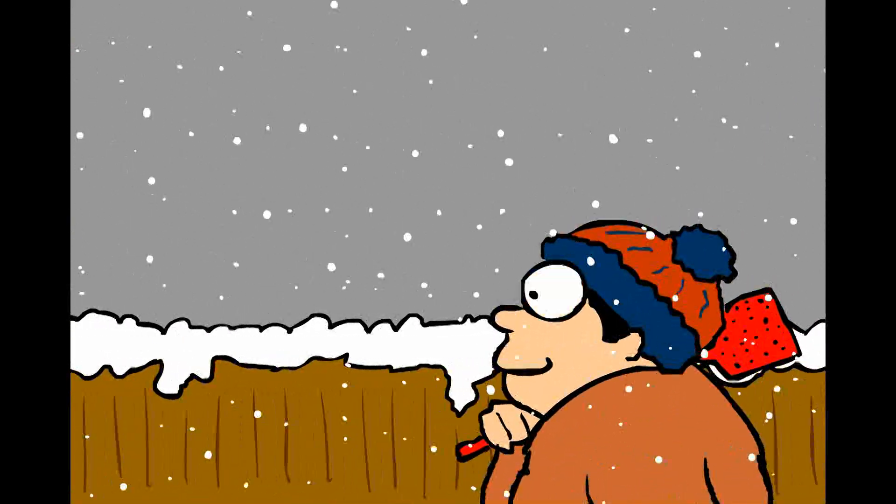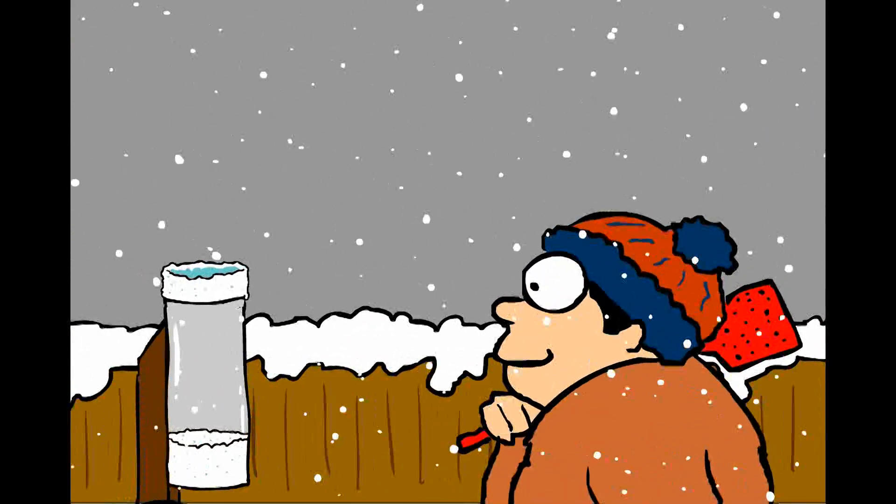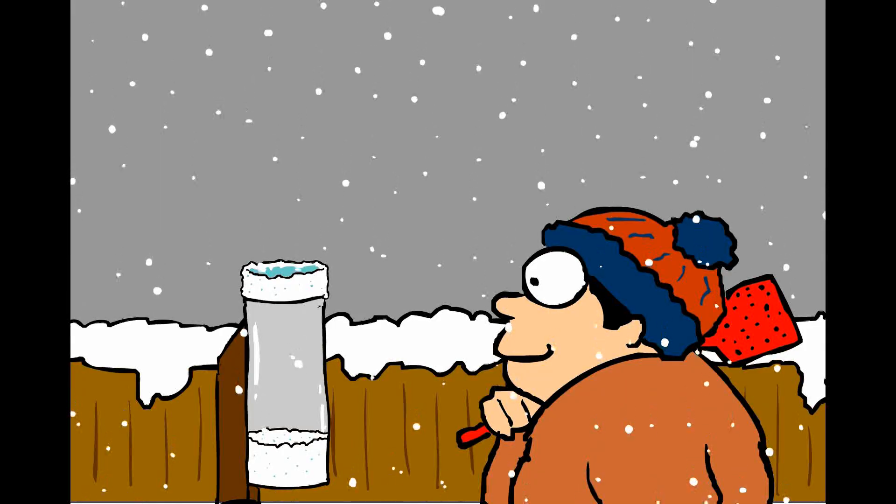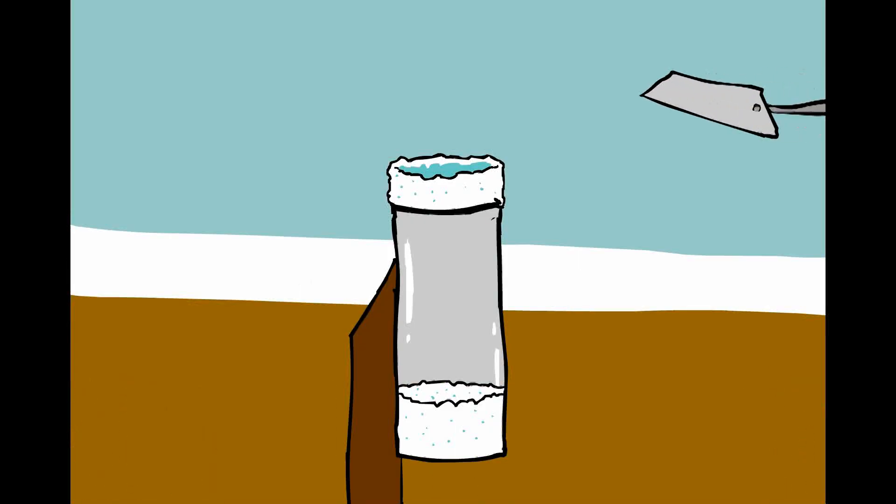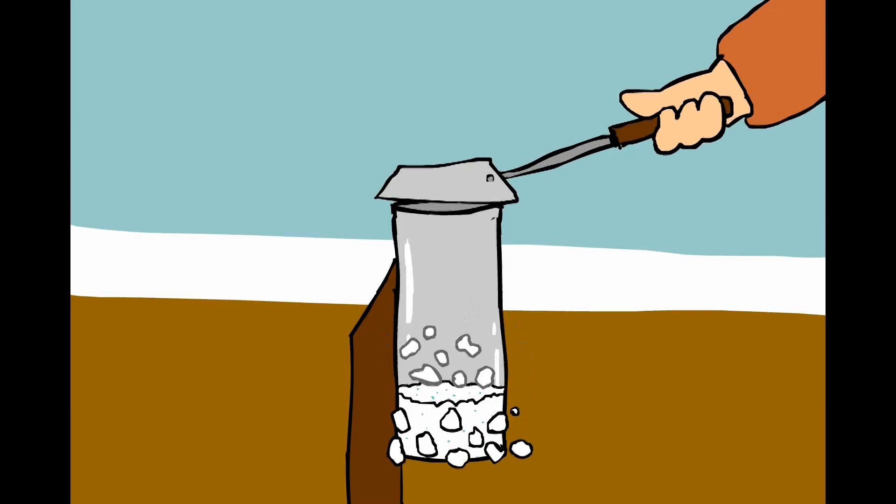You may find, especially in cases where there was little or no wind, that some snow has accumulated on the edge of your gauge. To remedy this, take a flat surface and press it directly down towards the top of your gauge.